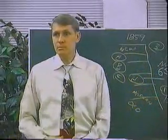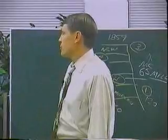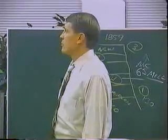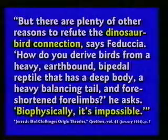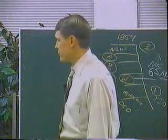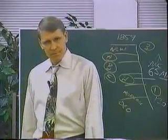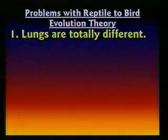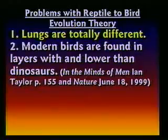Alan Feduccia says: 'There are plenty of other reasons to refute the dinosaur-bird connection. How do you derive birds from a heavy, earthbound, bipedal reptile that has a deep body, a heavy balancing tail, and four shortened forelimbs? Biophysically, it's impossible.' Modern birds are found in layers lower than dinosaurs. Dinosaurs supposedly died out 65 million years ago, yet we've got birds 130 to 140 million years old. How can dinosaurs turn into birds when birds are there before dinosaurs are even gone?